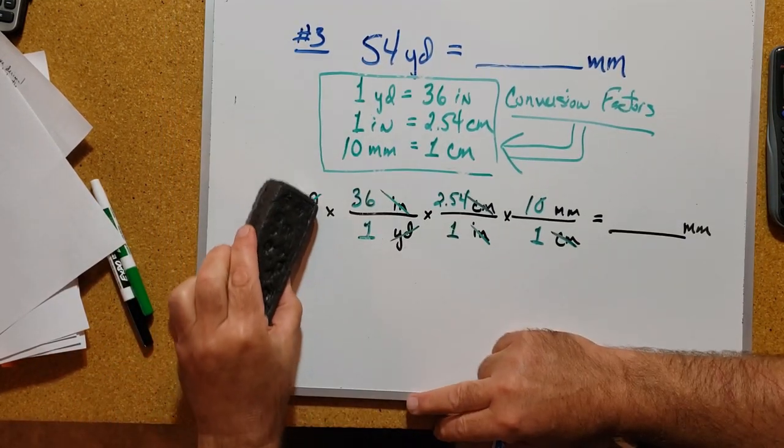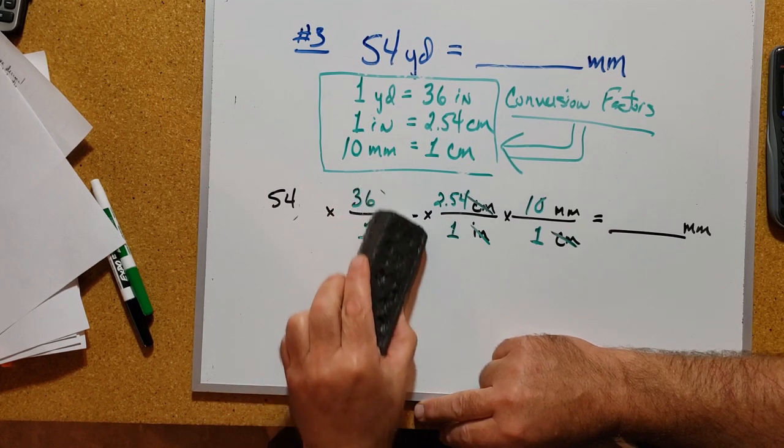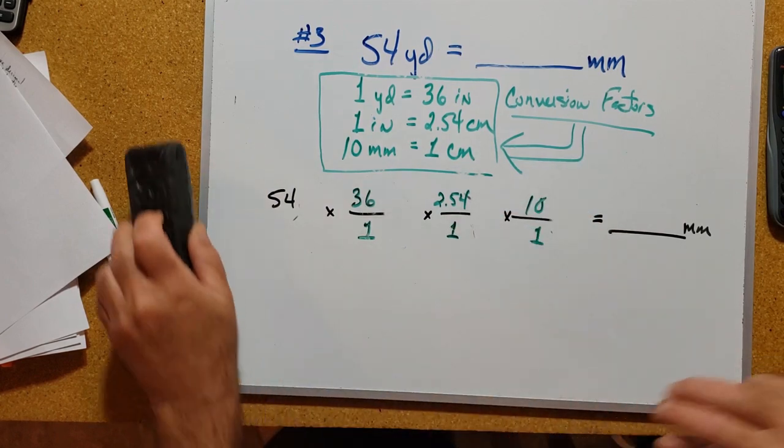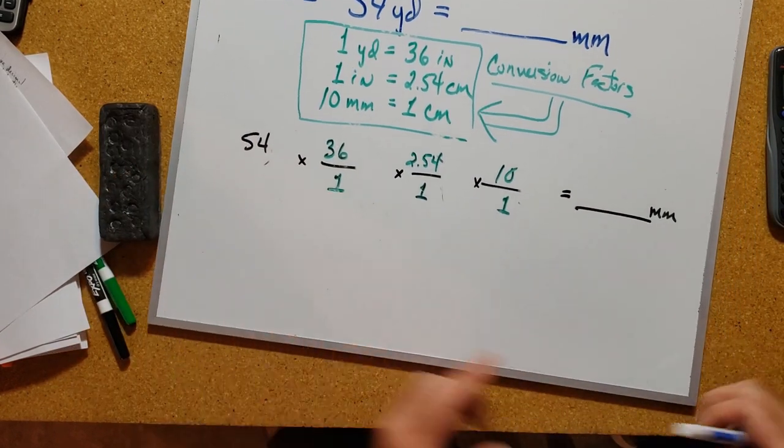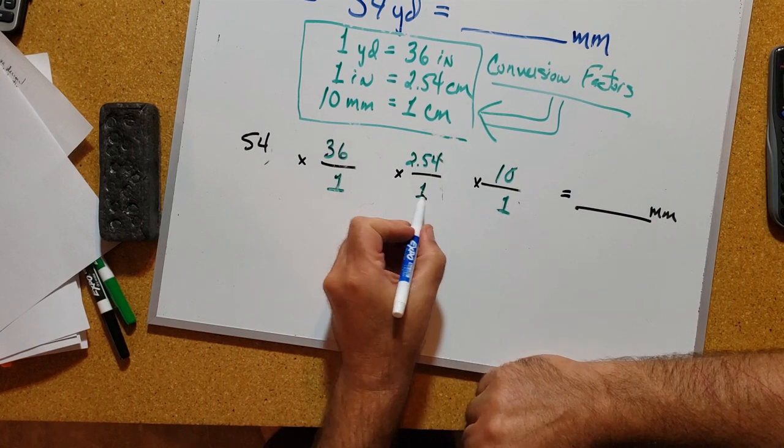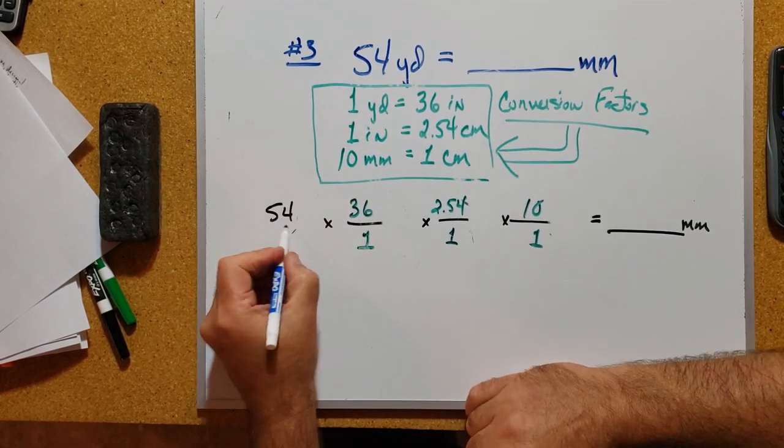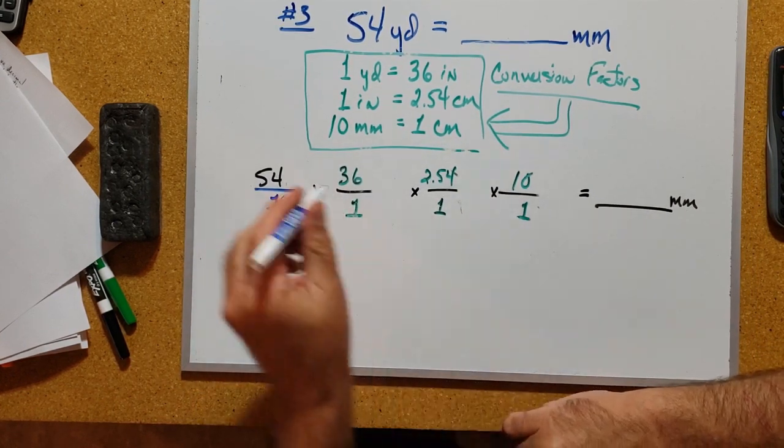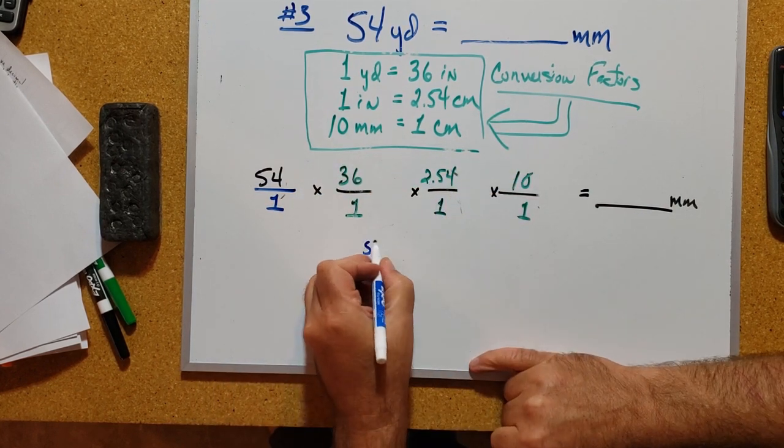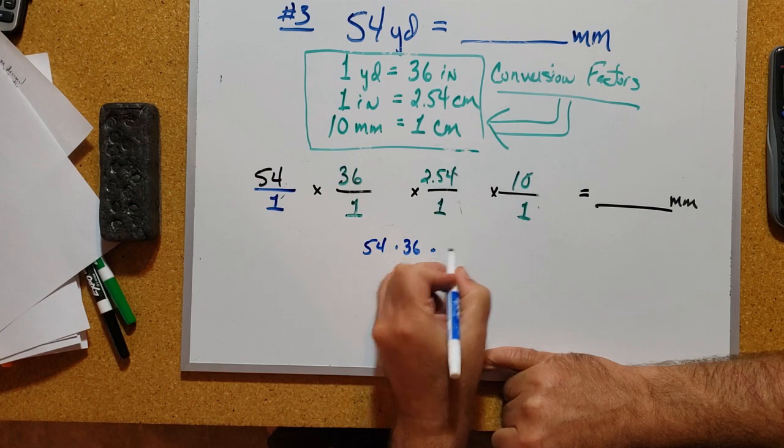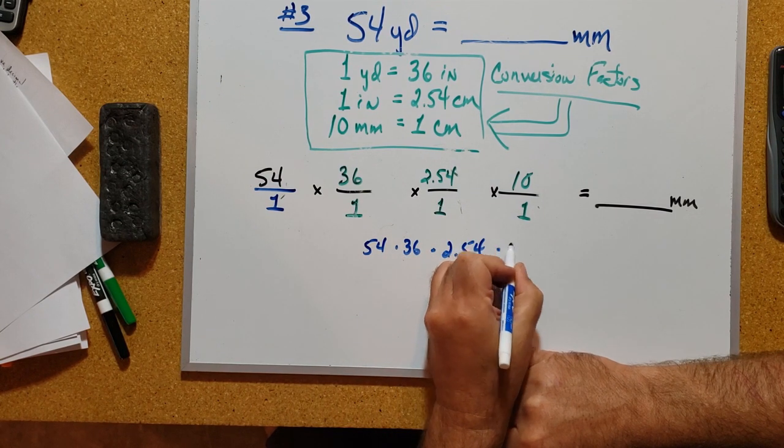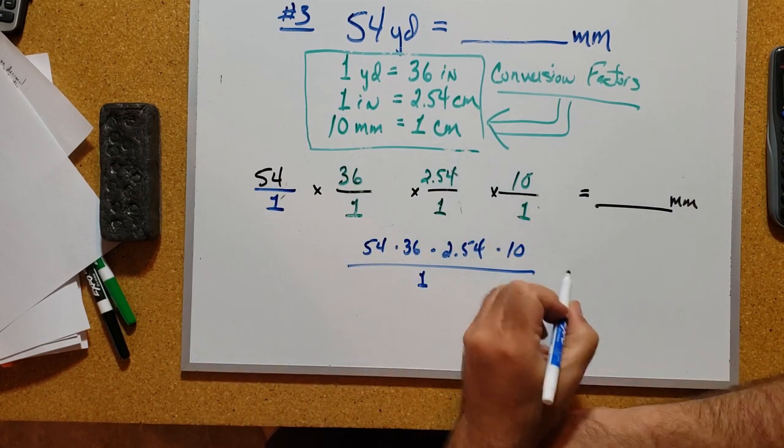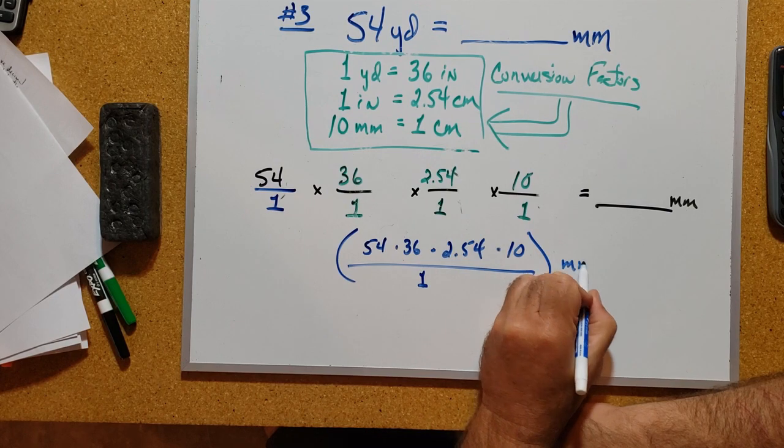Well, this is where you can go ahead and mentally at least erase all of the units in your equation so that the only thing you're looking at are the numbers. This looks like a fraction times a fraction times a fraction times a fraction - I can put it over one and make a fraction out of it. When I multiply fractions together, I multiply all the numerators. So it's going to be 54 times 36 times 2.54 times 10, all over 1 times 1 times 1 times 1, which is just 1. And that would be my answer in millimeters.